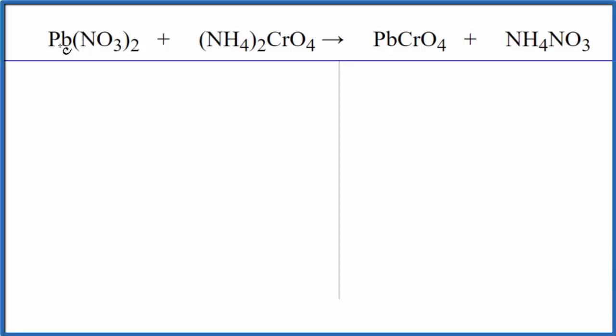In this equation we have lead nitrate plus ammonium chromate. This is a double displacement reaction. The lead ion and the ammonium ion are going to switch places and we'll end up with these products.